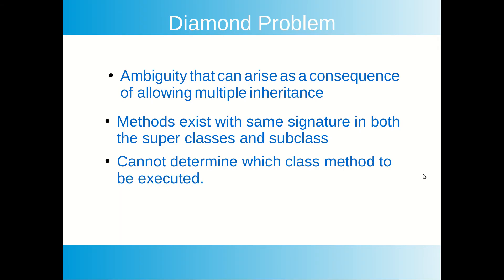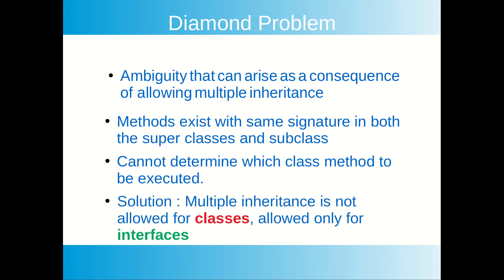So how did Java designers get rid of the diamond problem? They did not solve it — Java designers avoided the diamond problem by not allowing multiple inheritance for classes in Java. One thing you have to note here is that they allowed multiple inheritance for interfaces only.